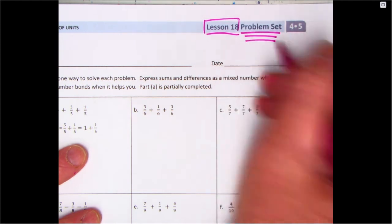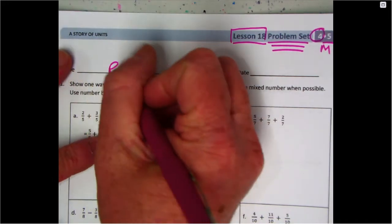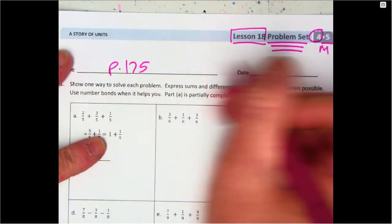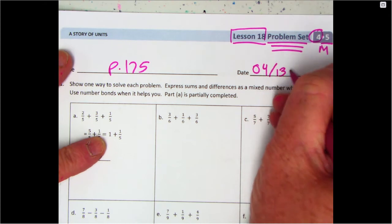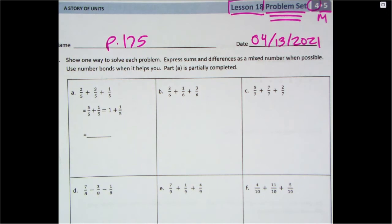It is our problem set, Grade 4 Module 5. If that doesn't help you out enough, get over to page 175. Today's date is 04/13/2021. Let's see what's going on today. It looks like more of what we were doing yesterday. It says show one way to solve each problem, express sums and differences as a mixed number when possible, use number bonds when it helps you. Part A is partially completed for us.